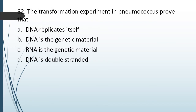Question No. 82: The transformation experiment in Pneumococcus proves that — DNA replicates itself, DNA is the genetic material, RNA is the genetic material, or DNA is double stranded? The correct answer is Option B: it proves that DNA is the genetic material.